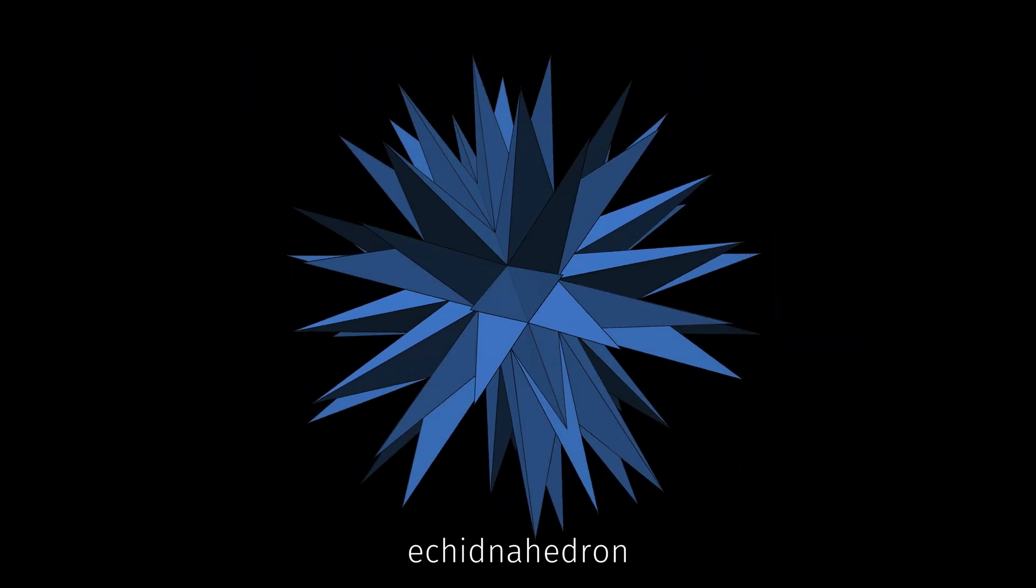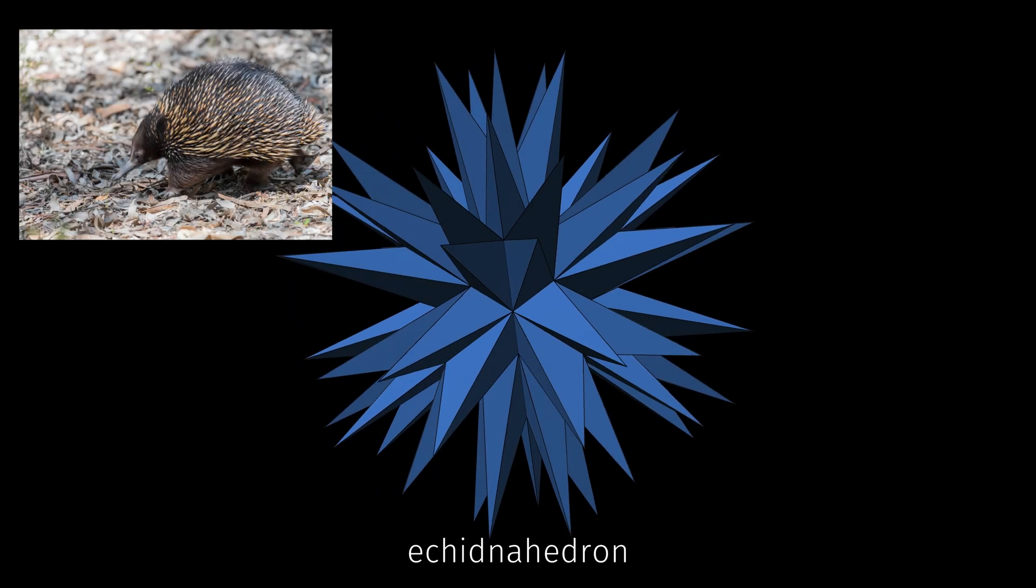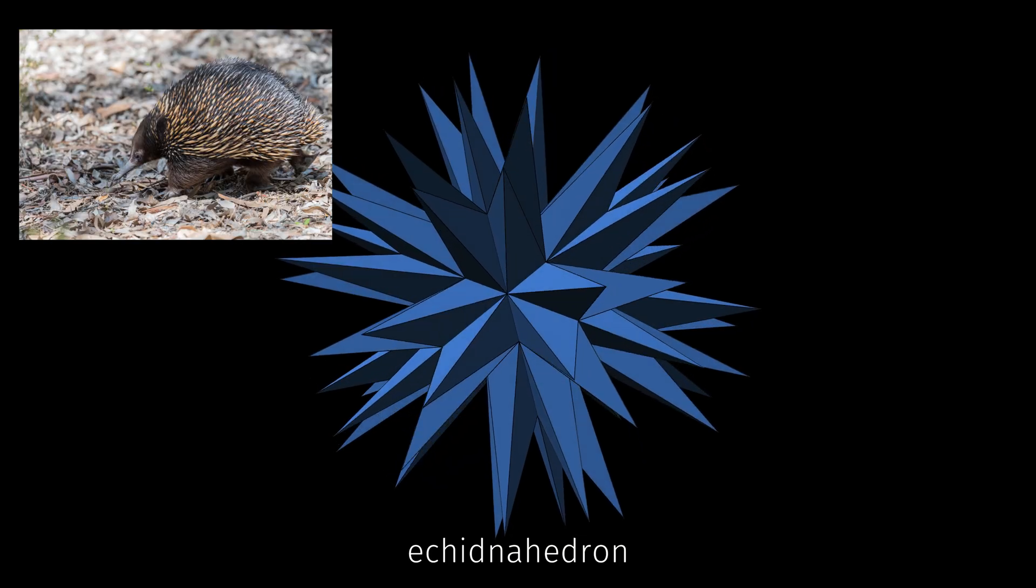This is the final stellation of the icosahedron, also known as the echidnahedron. Its resemblance to the echidna, one of the spikier members of the animal kingdom, gives the shape its nickname.